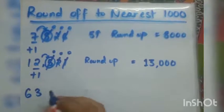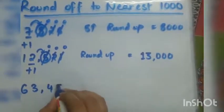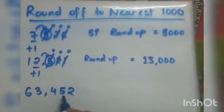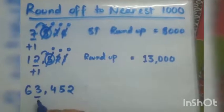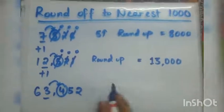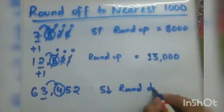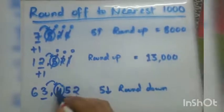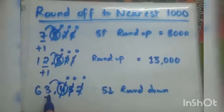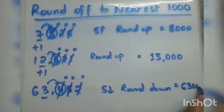Let's take another example: 63,452. The number in the thousands place is 3. To the right of 3 is 4. Since 4 is less than 5, this will be round down. In round down, the digits after the thousands place become zero, but the thousands digit has no change. So the answer is 63,000.